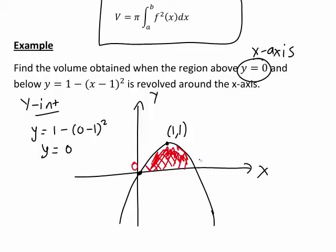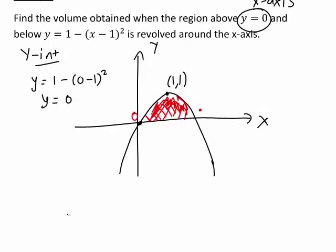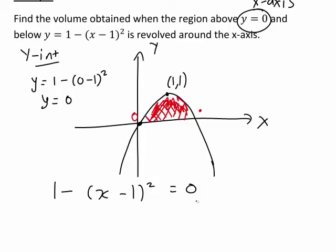But what is this value over here that bounds the region on this side? To find out, we need to know the other point where y = 1 - (x - 1)² cuts the x-axis. That is, we need to know what the other x-intercept of the graph is. To find that, we solve 1 - (x - 1)² = 0.